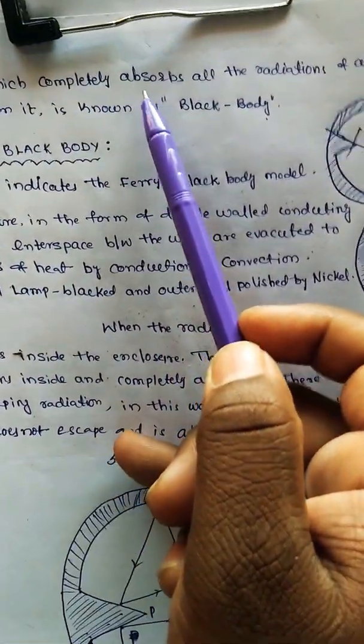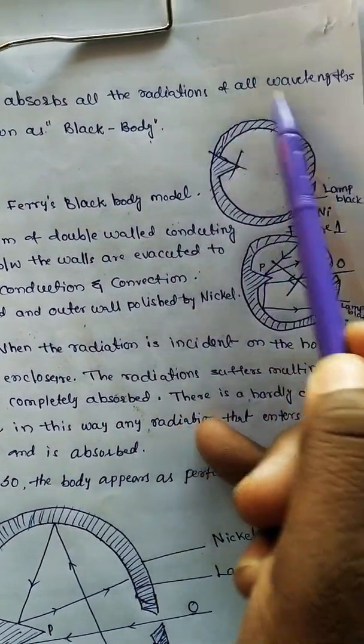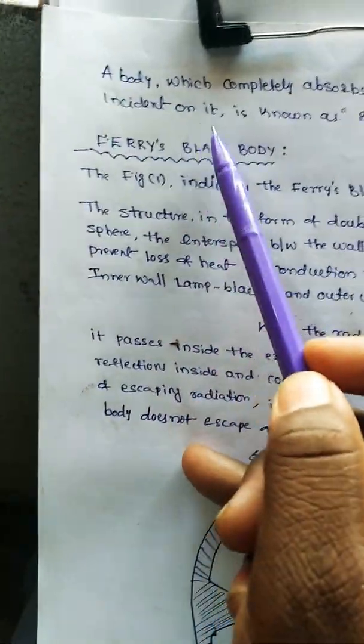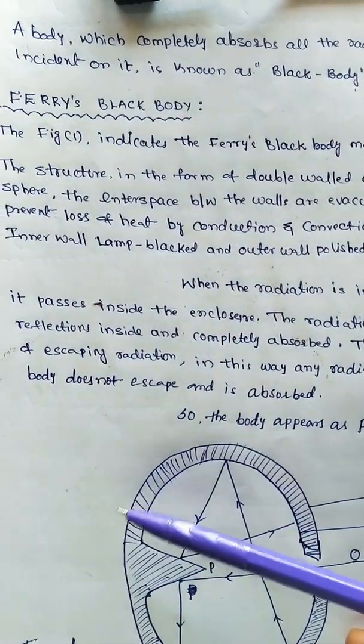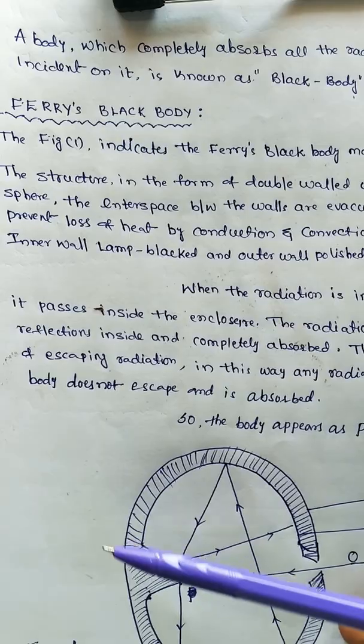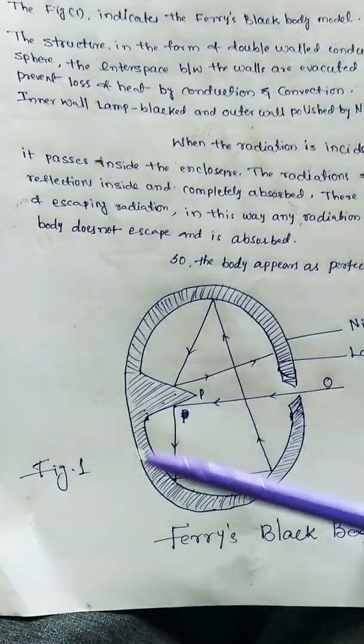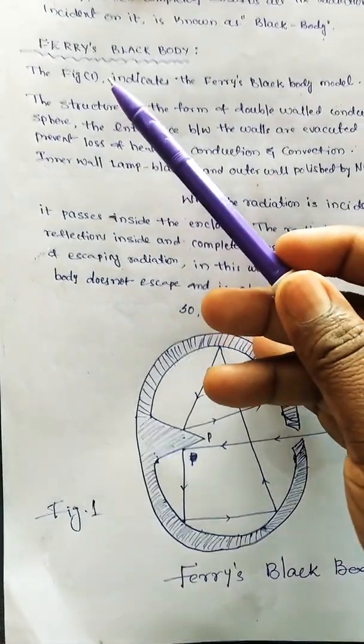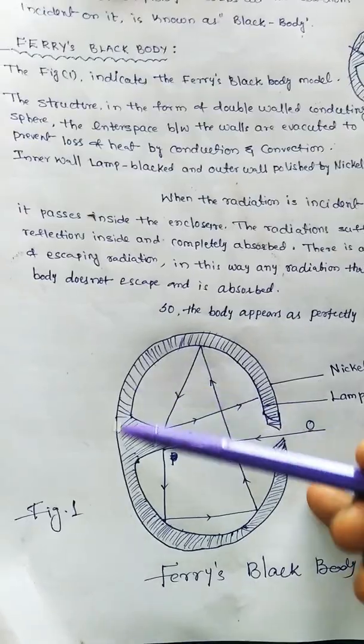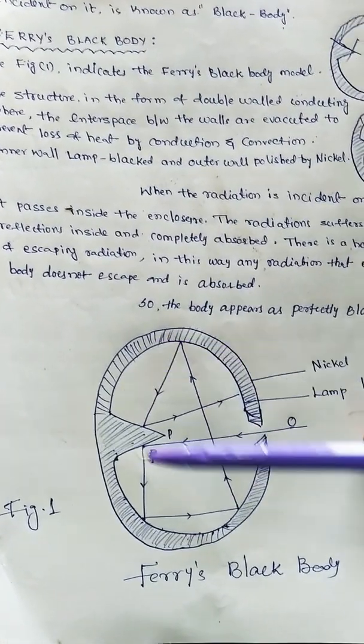As we already have the definition which completely absorbs all radiations of all wavelengths incident on it, this model is doing the same thing. That is the reason it is considered as a black body. This was introduced and formulated by Michel Ferry, so it is called as Ferry's black body.